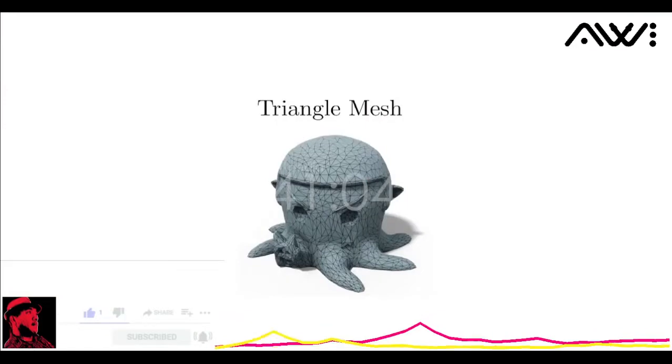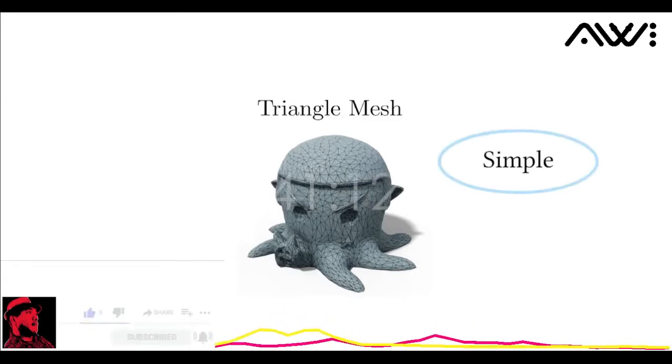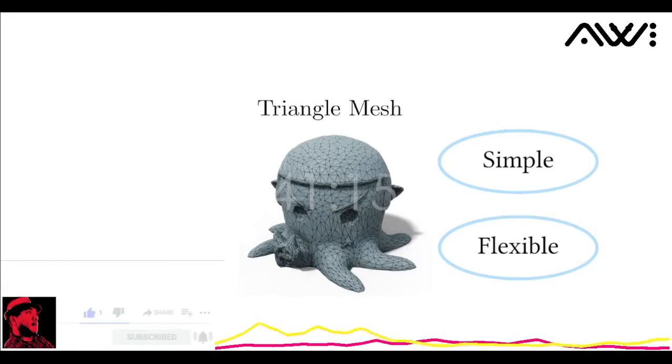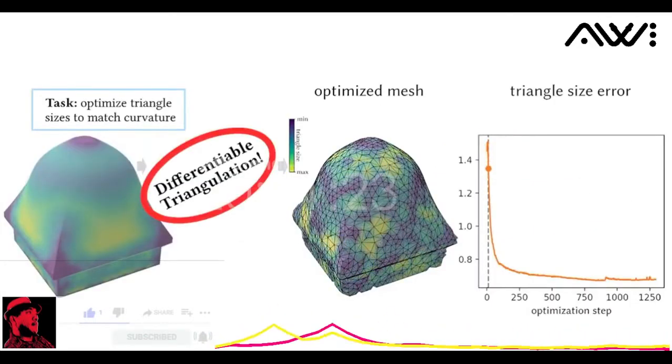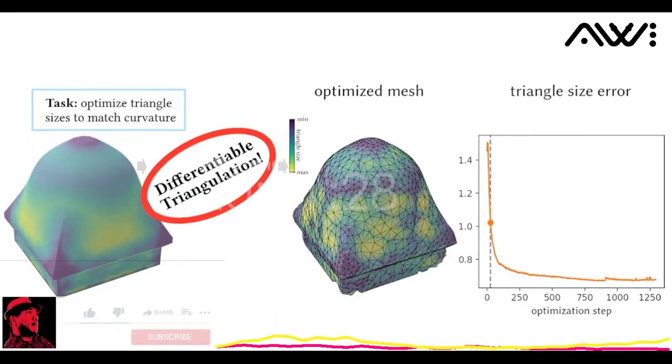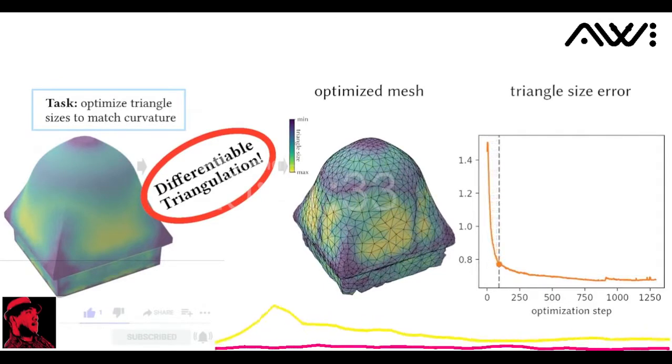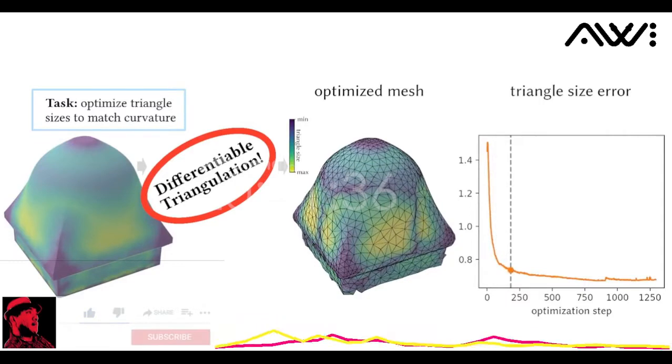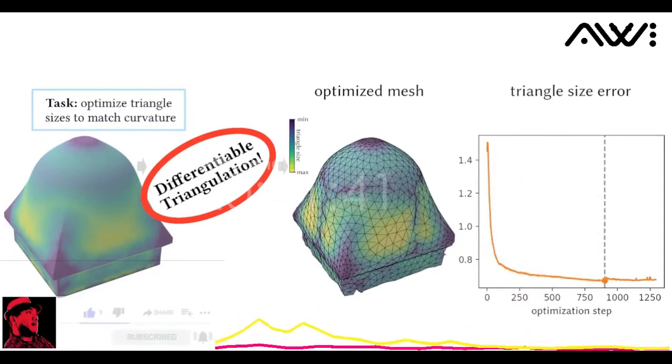We introduce the first formulation for differentiable triangulations. Triangle meshes are currently the most popular surface representation because of their simplicity and flexibility. However, we cannot directly optimize over them in deep learning methods as energies defined over the discrete connectivity do not lead to gradients. We solve this problem by representing soft triangle inclusion scores using power diagrams. We can optimize any objective with gradient-based optimization methods. Here, we optimize the triangle size to match curvature values. Come to our talk to learn more about how to directly handle meshes with deep learning frameworks using our differentiable triangulation.